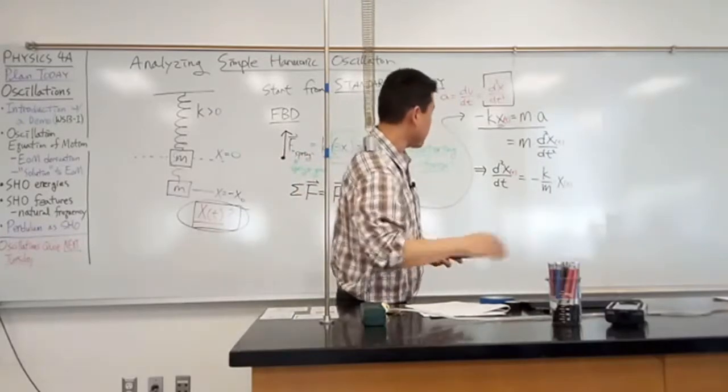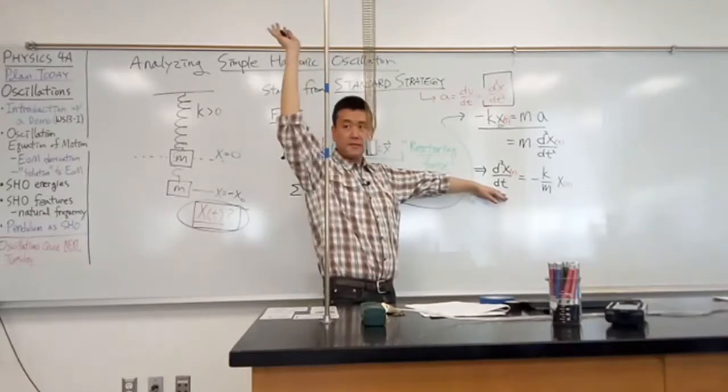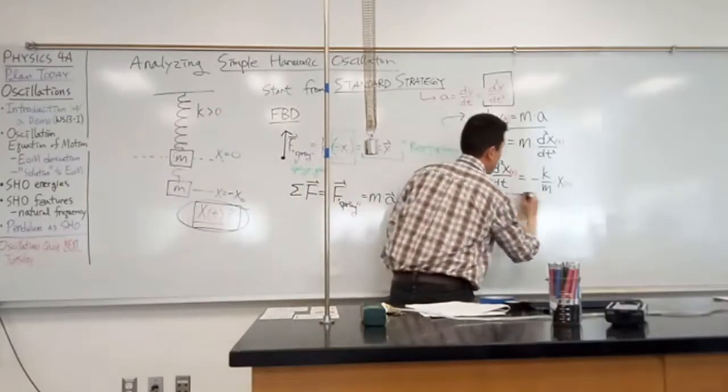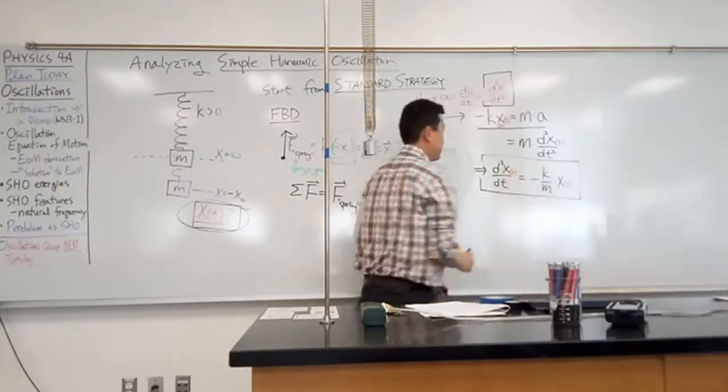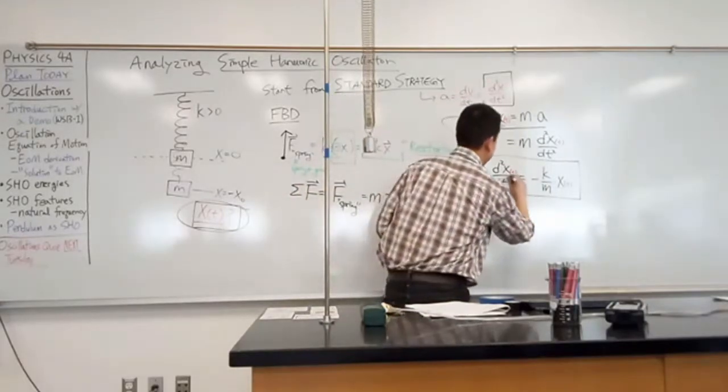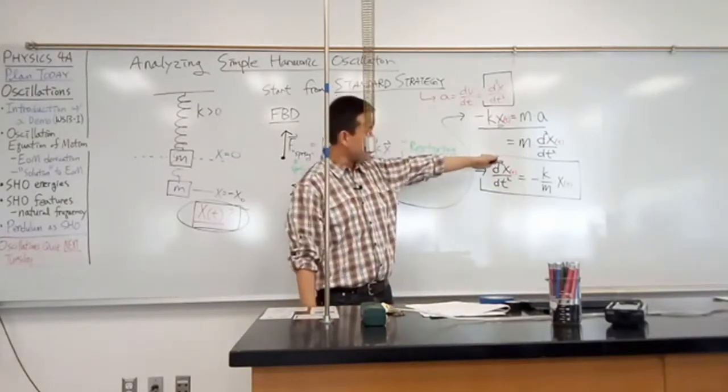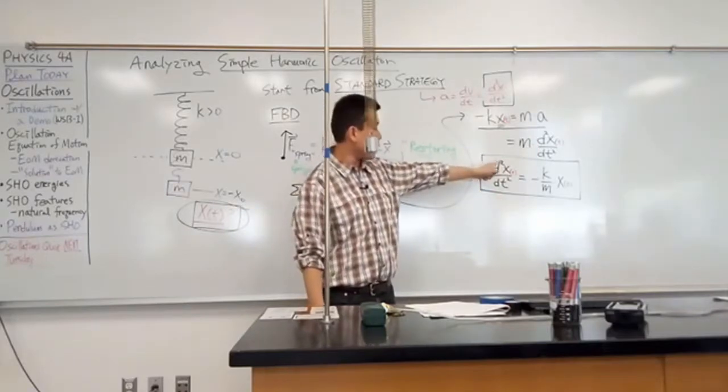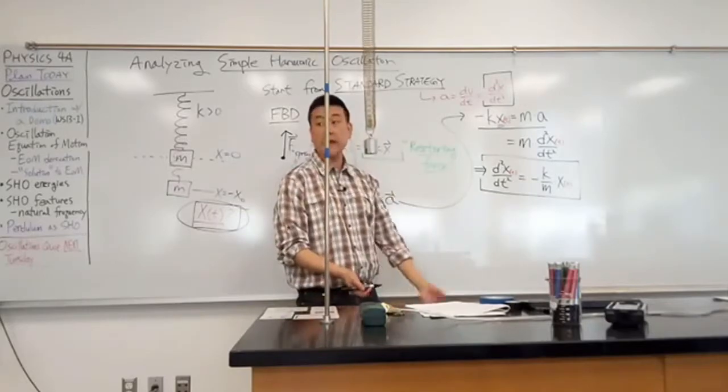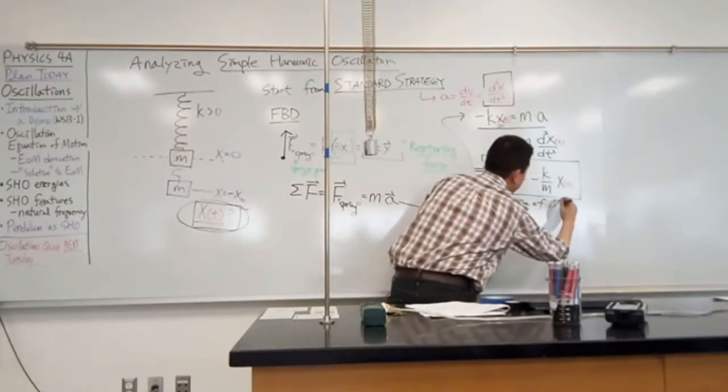So this is what we call differential equation. How many here have seen a differential equation in your math class? You should have seen it if you haven't solved one. So we call it differential equation because it's an equation that involves derivatives. Here's my derivative. It's not any derivative, it's a second order derivative. So it's a differential equation involving a second order derivative of time. And in the context of physics, this equation actually has a name. We call this equation of motion.